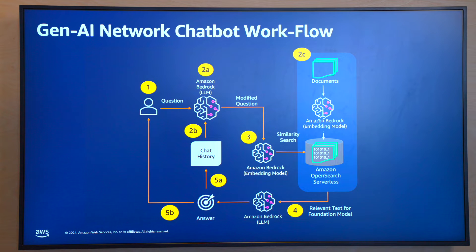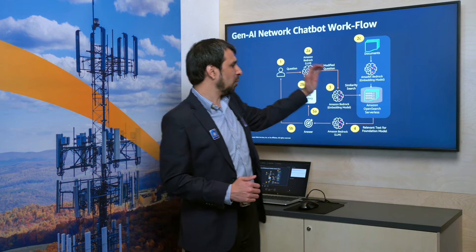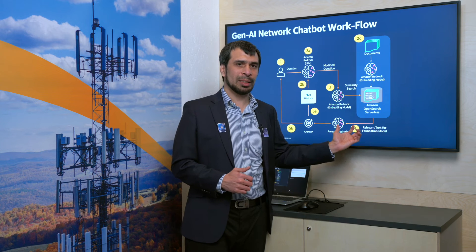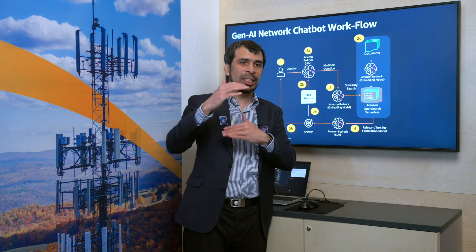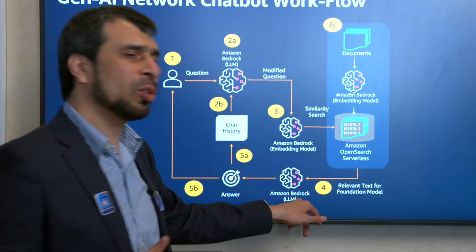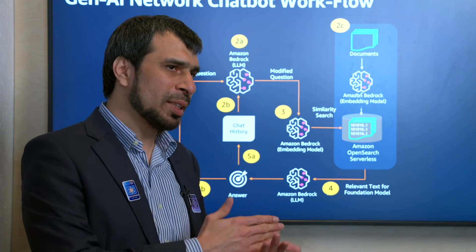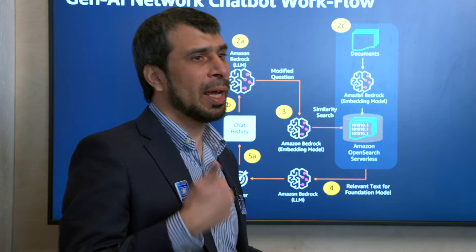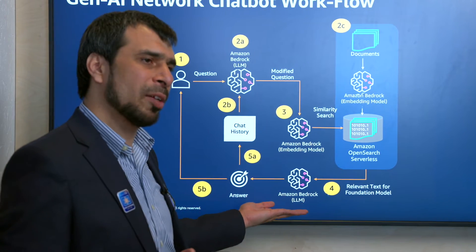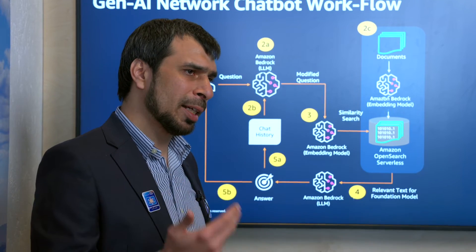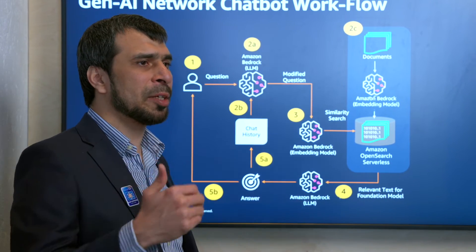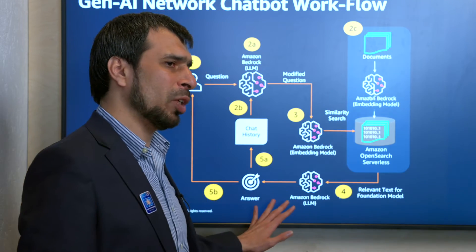When a user is asking a question, that question is also converted using the Amazon Titan embedding model to a numerical representation. Now you have a question in numerical representation and your documents in numerical representation and indexed. You perform a similarity search, which finds the relevant chunks in the documents and feeds them into the fourth step. Now you have your question and your relevant sections from your documents, and you feed this to the large language model — we are using Claude V2.1 from Anthropic. This returns a contextualized response in natural language based on your documents.